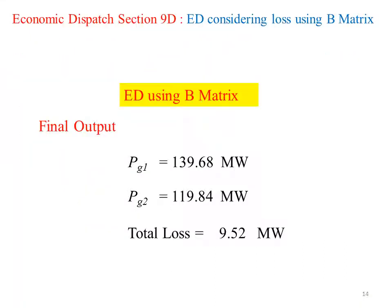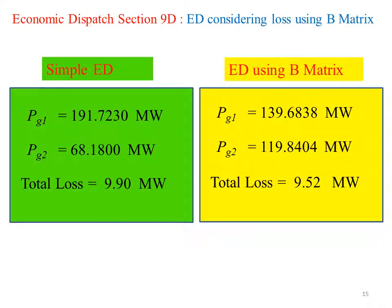The power loss should be 9.52 megawatts. Let's compare the output from two methods. The total loss from simple economic dispatch without loss consideration is 9.9 megawatts, whereas the total loss from economic dispatch with loss consideration is 9.52 megawatts, which is approximately 0.4 megawatts less, or approximately 4% power loss reduction.